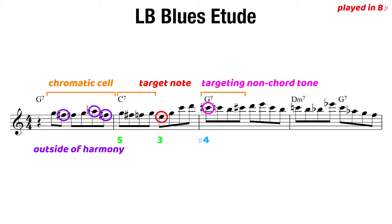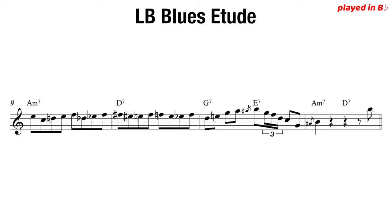So then C-sharp, C, B, C-sharp, and then eventually we resolve to D, which is the fifth of G7. Then we play another chromatic cell into some kind of altered scale cell on G7, with E-flat and A-flats being played there. And this happens throughout the etude.